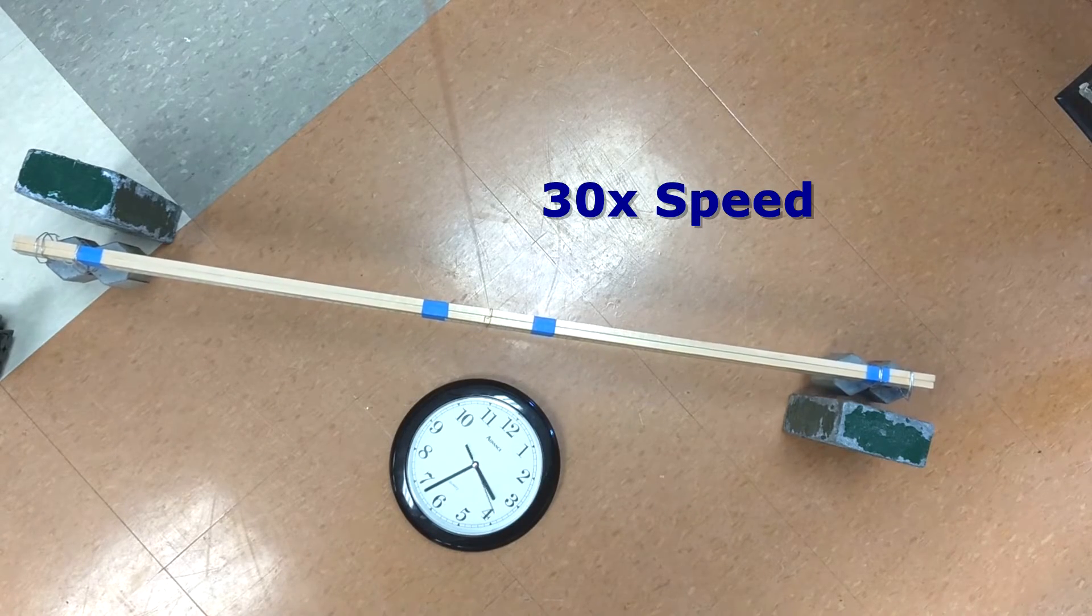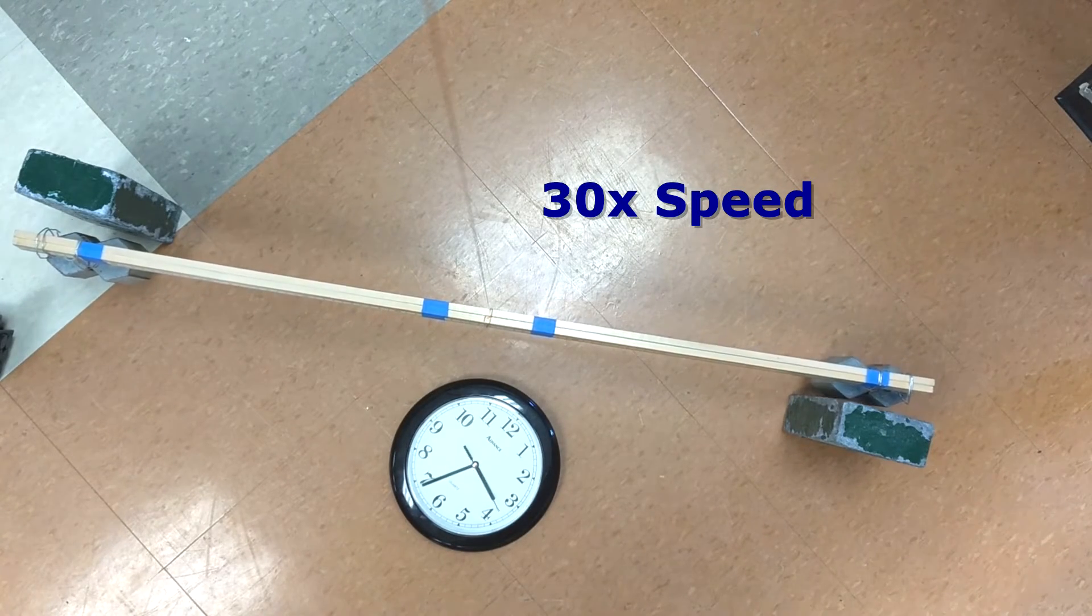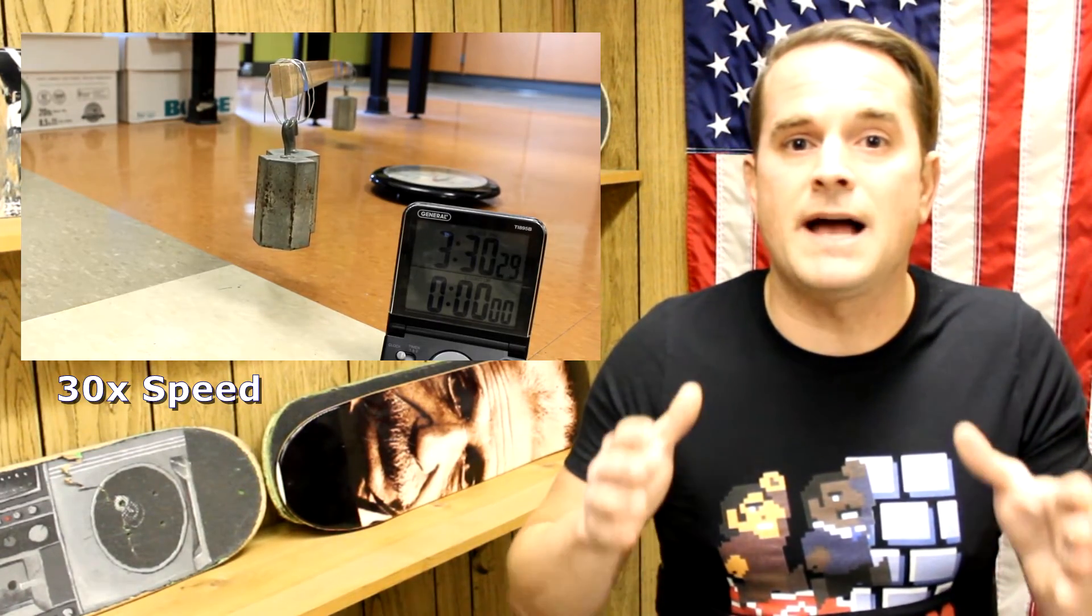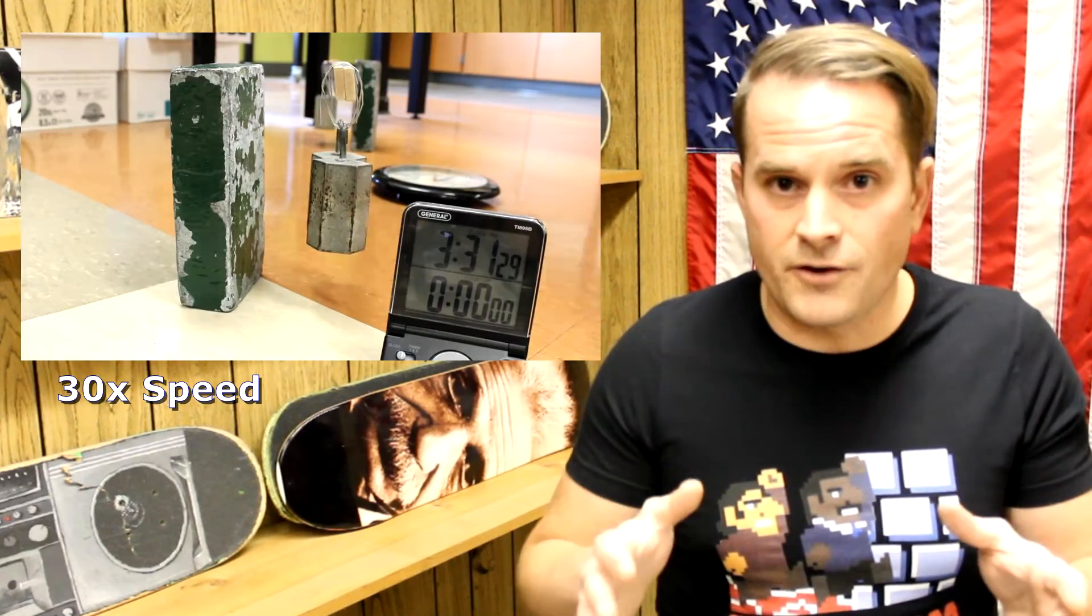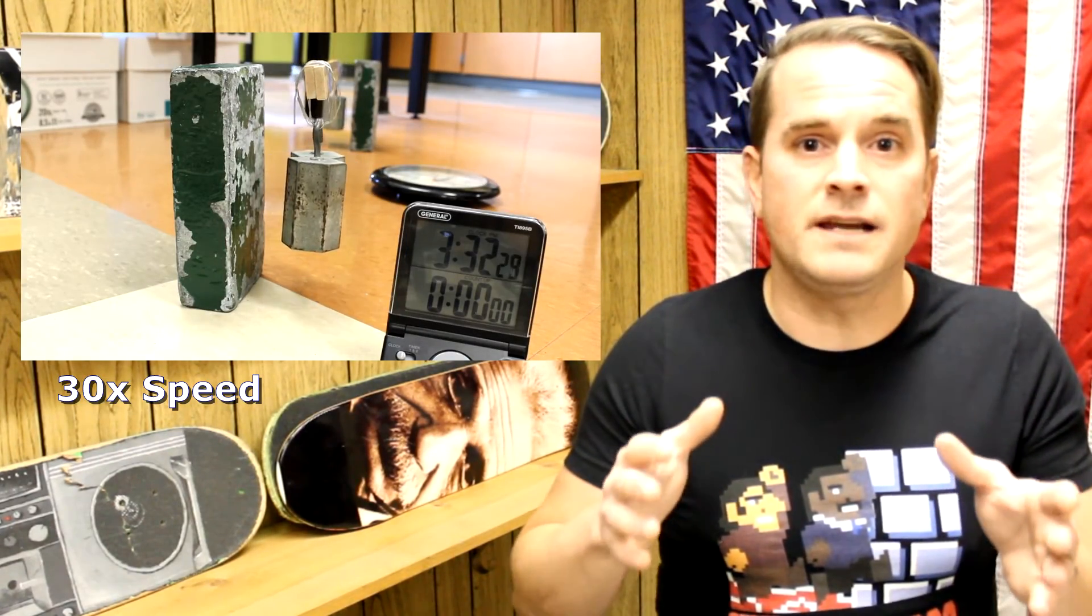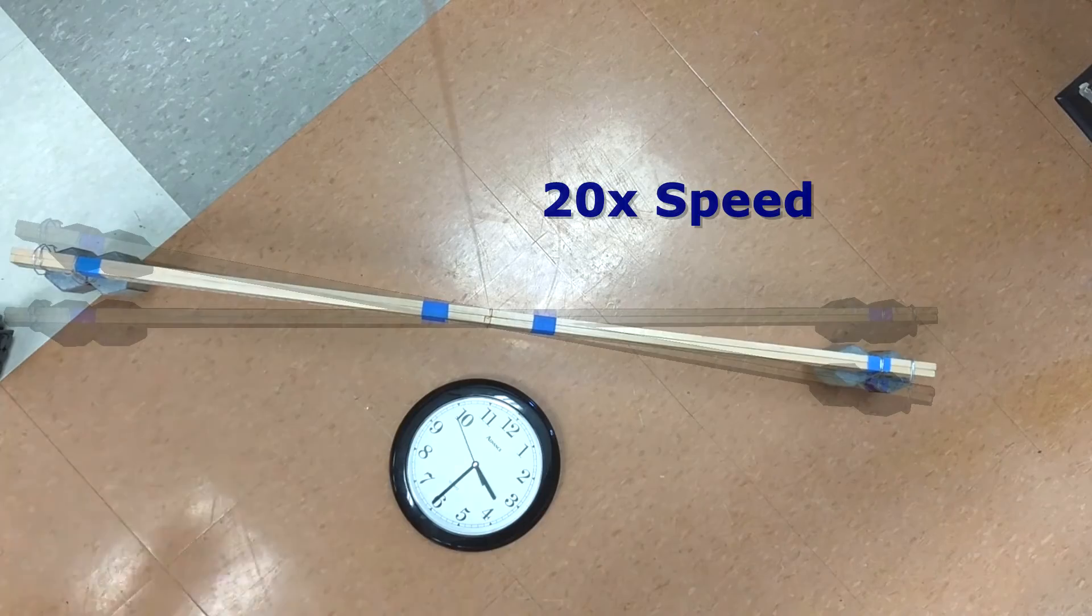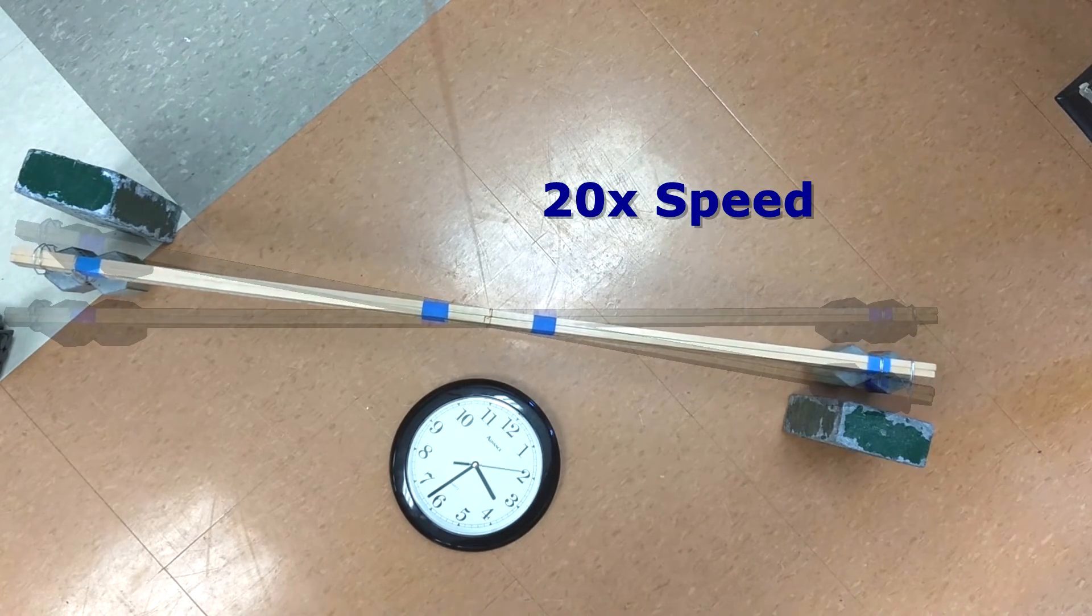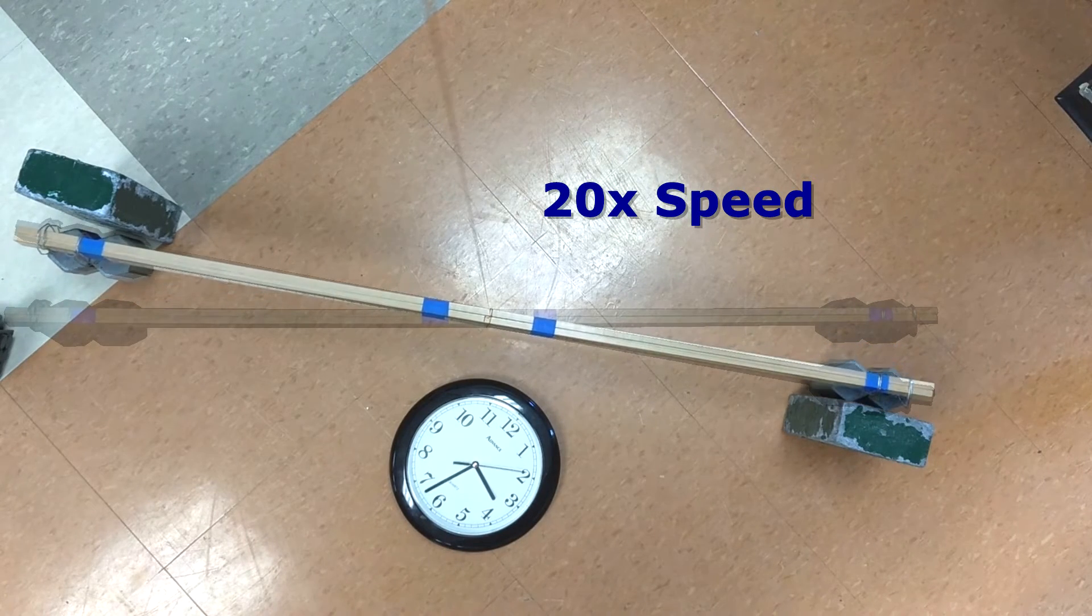The only way in physics that this can be occurring is that the torsion balance is being accelerated in the clockwise direction. An acceleration on a mass is due to a force. The lead bricks are exhibiting a force of attraction on the masses of the torsion balance. This is the gravitational effect of the lead bricks, disrupting the previous equilibrium.